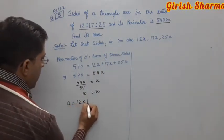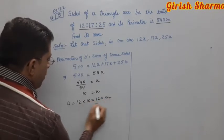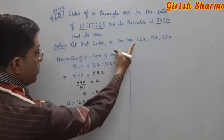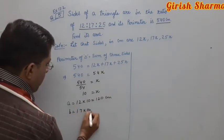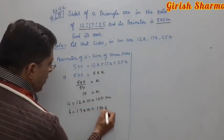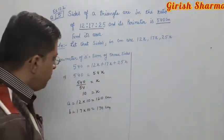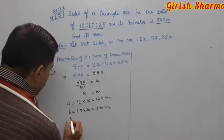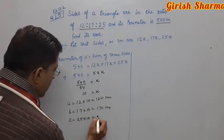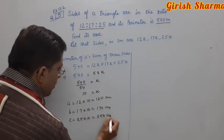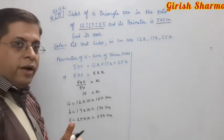So the sides will be: a equals 12 into 10 equals 120 centimeters; b equals 17 into 10 equals 170 centimeters; and c equals 25 into 10 equals 250 centimeters.